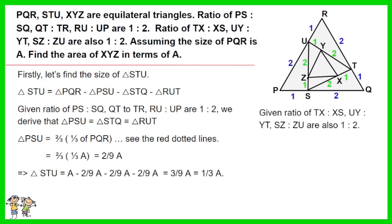Given ratios of TX to XS, UY to YT, SZ to ZU are also 1 to 2, we derive that triangle XYZ equals one third of triangle STU. As such, triangle XYZ is equal to one third times one third of A. The answer is 1 over 9 of A.